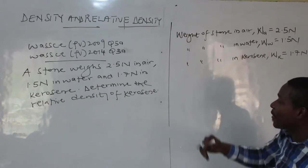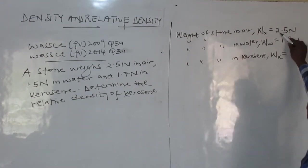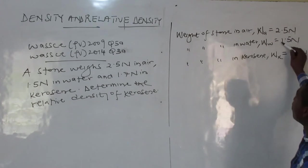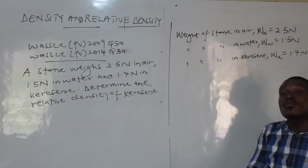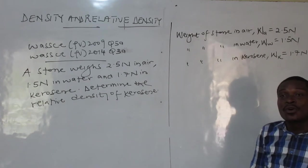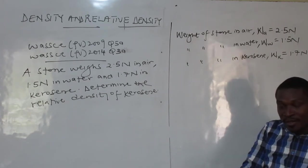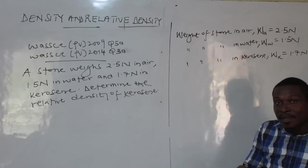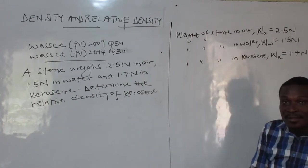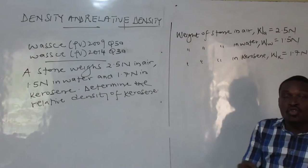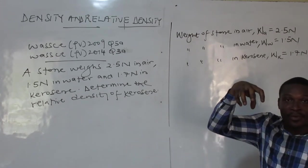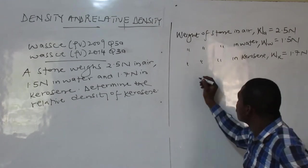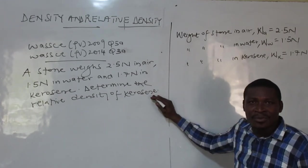So notice the differences — the apparent loss in weight. It was 2.5 in air; you drop it in water and you have 1.5, meaning there is a loss in weight. That loss in weight is what we call upthrust, because upthrust is the upward force which holds what is immersed in fluids. Any time you have a loss in weight, it is equal to your upthrust — the force that holds you on the surface of the liquid.